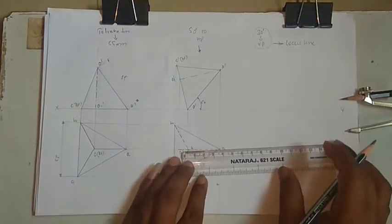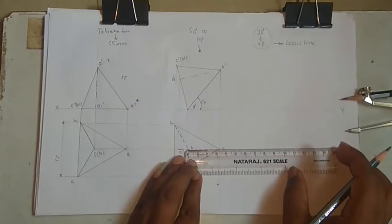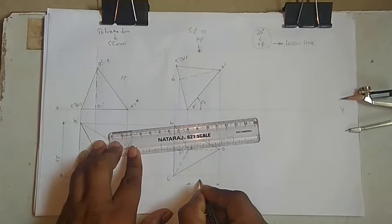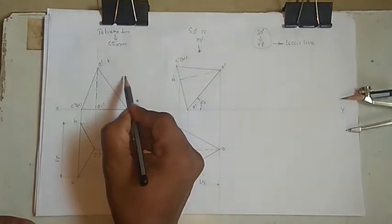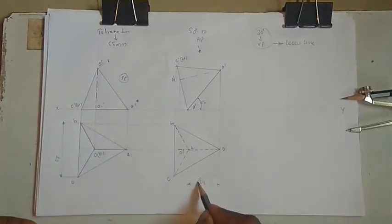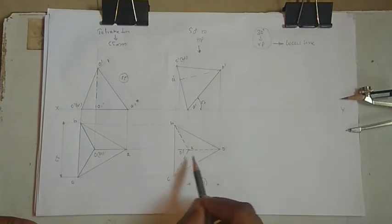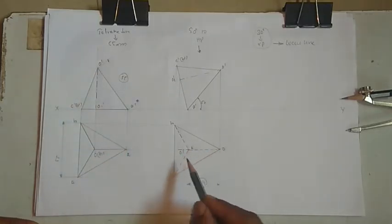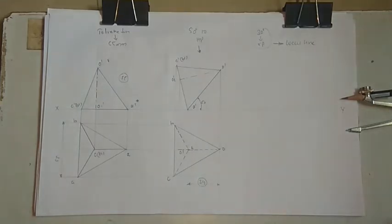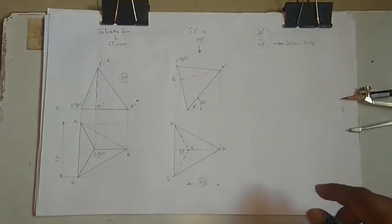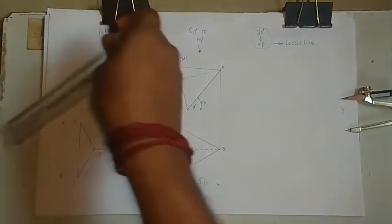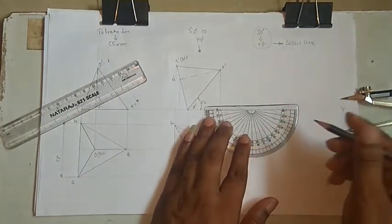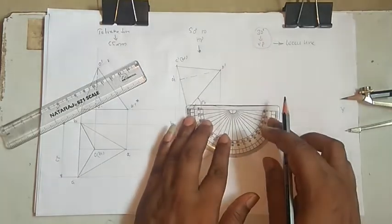Measure O to A — it comes to about 34mm for me. So the first length (true length) is 55mm and the second apparent length is 34mm. Note: this is an edge O to A, not an axis. Now, since the side is inclined at 30 degrees to the VP, take a 30-degree line anywhere.